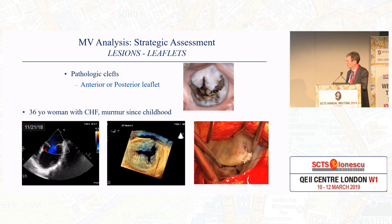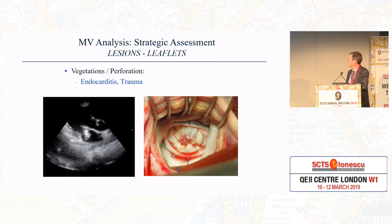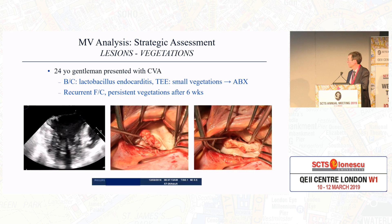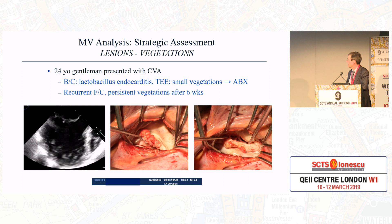Here you can see an initial attempt at repair with a suture placed at the free edges of the patient's posterior leaflet cleft. Vegetations and perforations can be a consequence of endocarditis or trauma. Here you can see an endocarditic vegetation and, following resection, reconstruction with a pericardial patch. Here is a gentleman who presented with a stroke and had endocarditis. TEE showed vegetations with fever and chills. He was treated with antibiotics for six weeks but recurred.